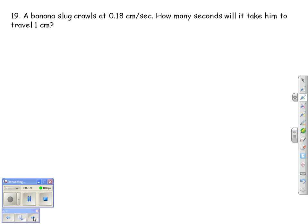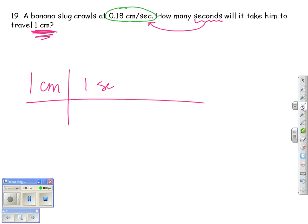A banana slug crawls at this rate. Our rates are going to be our conversion factors. We want to know how many seconds, so we want to know our time, it'll take if we want him to travel 1 centimeter. So we're going to start with 1 centimeter, because that's how far we want him to travel. We know that for every 1 second, he only moves 0.18 centimeters. So we just took our rate and flipped it, because we can do that with conversion factors. They can be 2 ways. And now we're in seconds, and we'll do our math and find out that it's going to take him 5.56 seconds to travel 1 centimeter. He's a really slow slug.